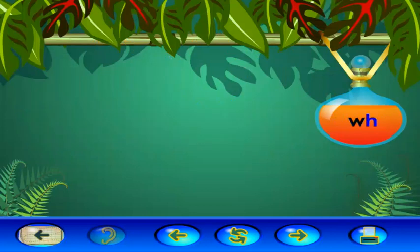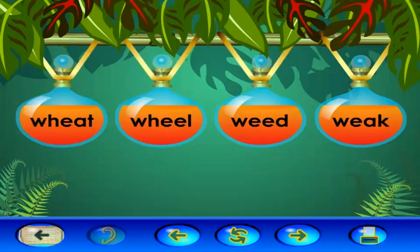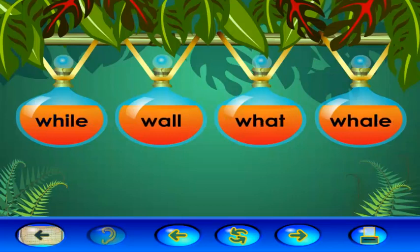When the letters W and H are together, they make the sound W, like in the word when. Let's find words with the sound W. Click the word wheat. Wheat. Good job! Click the word wheel. Wheel. Bravo! Click the word white. White. Super! Wow! You did a super job finding words!